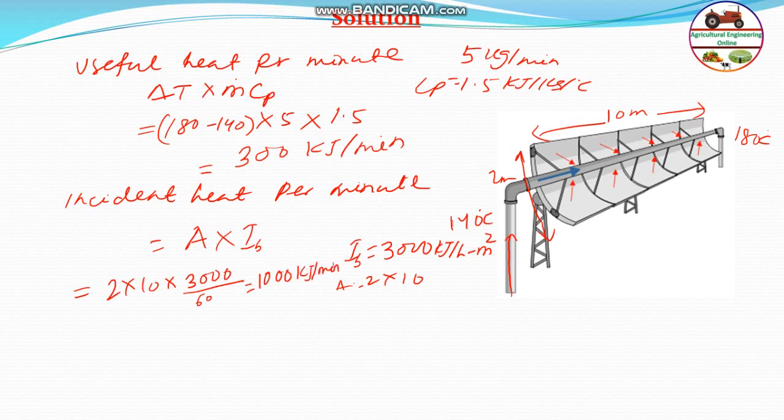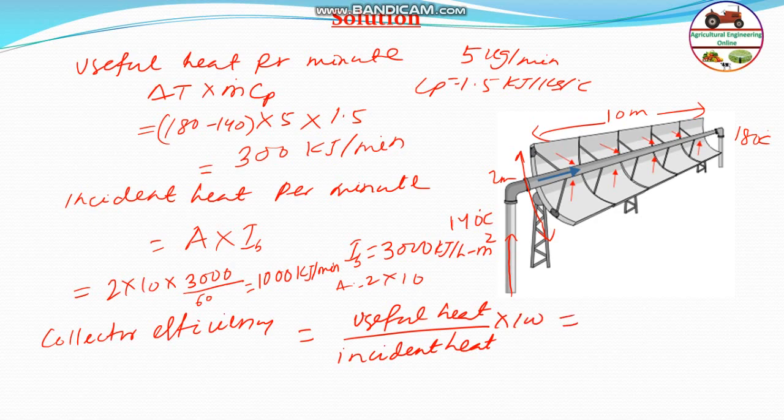Now, output is known and input is known. Therefore, the collector efficiency is very straightforward: useful heat divided by incident heat into 100 that will be equal to 300 divided by 1000 into 100 that will be equal to 30 percent. Answer will be 30 percent for this question.